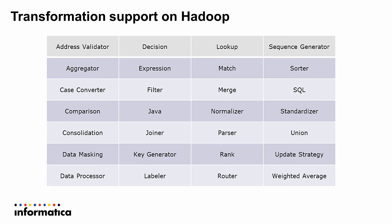The most common transformations used are the core transformations: aggregator, expression, filter, joiner, router, and union. Sequence generator is also listed — and while it's not supported in a slowly changing dimension mapping on MapReduce or Spark, Informatica Blaze does support the sequence generator. Blaze is the engine that supports sequence generator, and the same applies to the update strategy transformation.